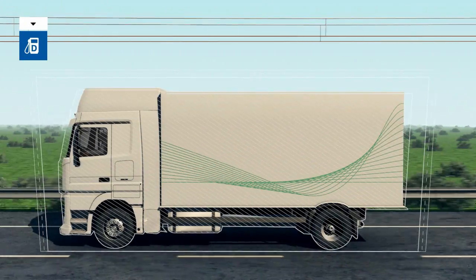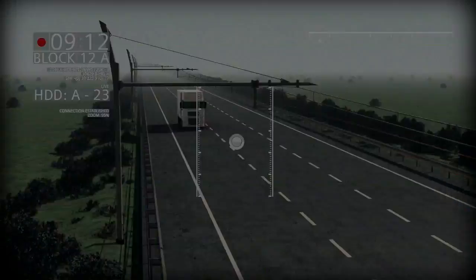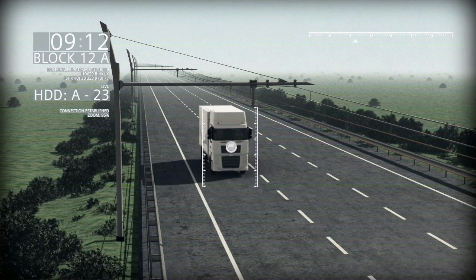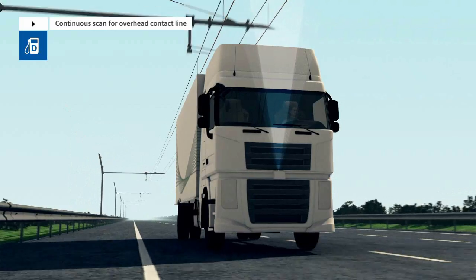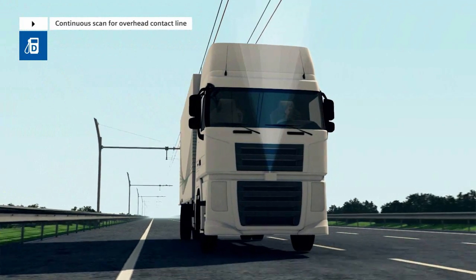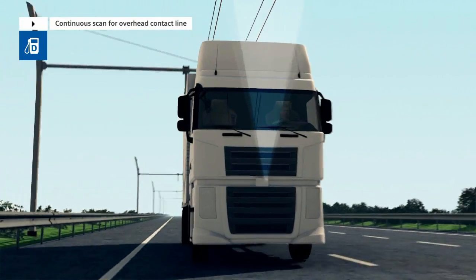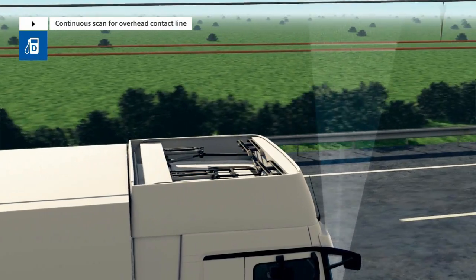In contrast to conventional trucks, the Siemens E-Highway vehicles can also be powered electrically. At first, a scanner continuously checks if an overhead contact line is installed above the traffic lane. As soon as an overhead line has been detected by the scanner,